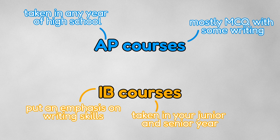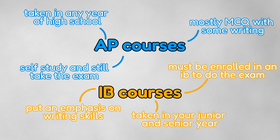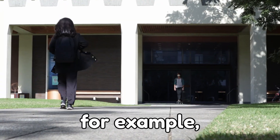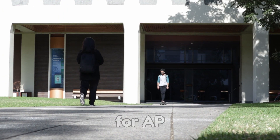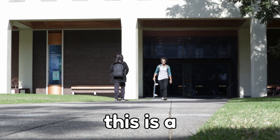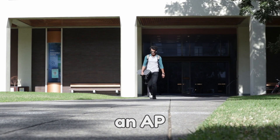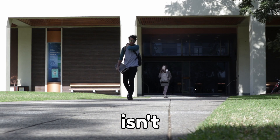Additionally, you have to be enrolled in an IB course at a school if you want to take the exam. In the US, you can self-study for AP exams and still take them, even though you may have never enrolled in the course at a school. For example, you don't have to attend a class for AP Chem in order to take the exam. This is popular for students whose school doesn't offer a particular AP course.